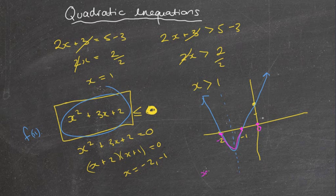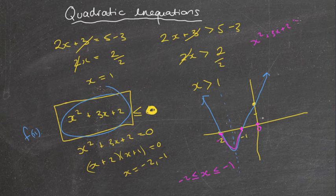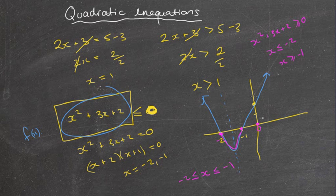So the solution is -2 ≤ x ≤ -1. Had the question been x² + 3x + 2 ≥ 0 instead, I'd look at where the parabola is above zero — that gives x ≤ -2 or x ≥ -1, because the curve is above the x-axis outside those intercept values.